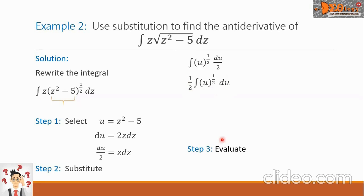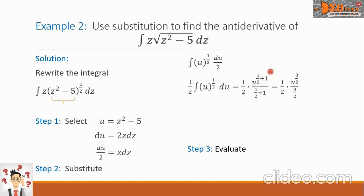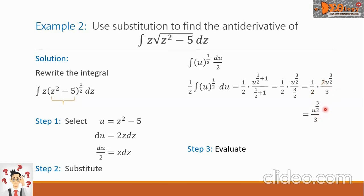Step 3: evaluate the integral using the power rule. We have 1 half times u raised to 1 half plus 1, all over 1 half plus 1. Since 1 half plus 1 equals 3 over 2, we write 1 half times u raised to 3 over 2, all over 3 over 2. Flipping the denominator gives 1 half times 2u raised to 3 over 2 over 3. Canceling the 2s simplifies to u raised to 3 over 2 over 3.